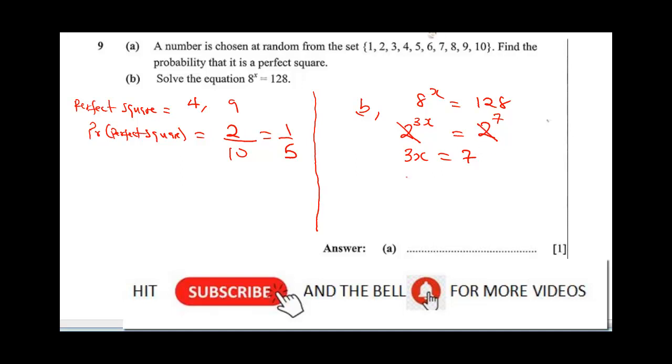We make x the subject of the formula, x would be 7 over 3, which is equal to 2 and 1 over 3. So final answer is 2 and 1 over 3.